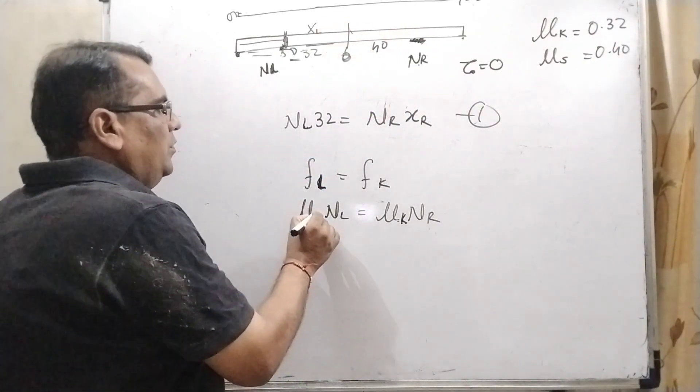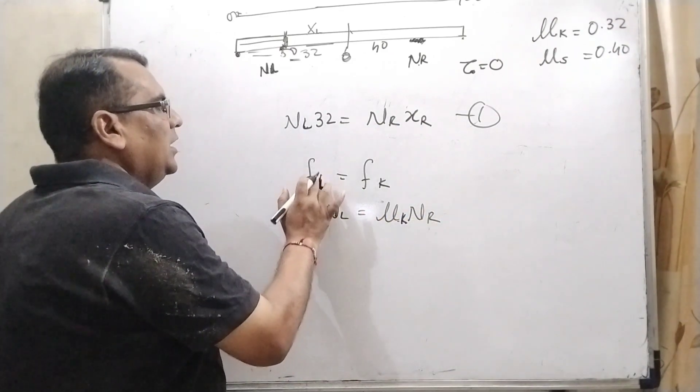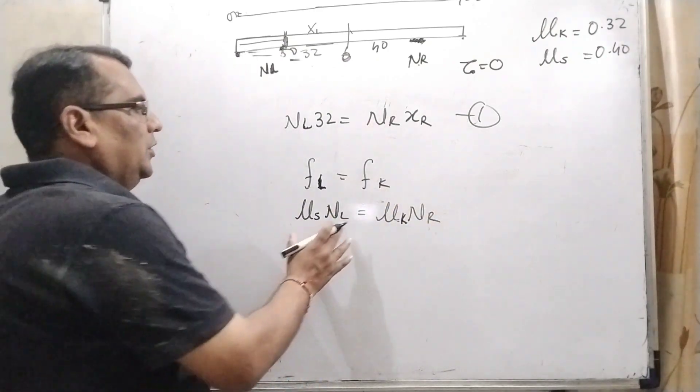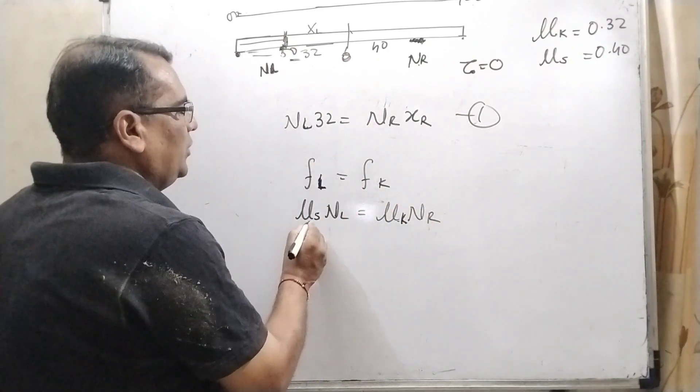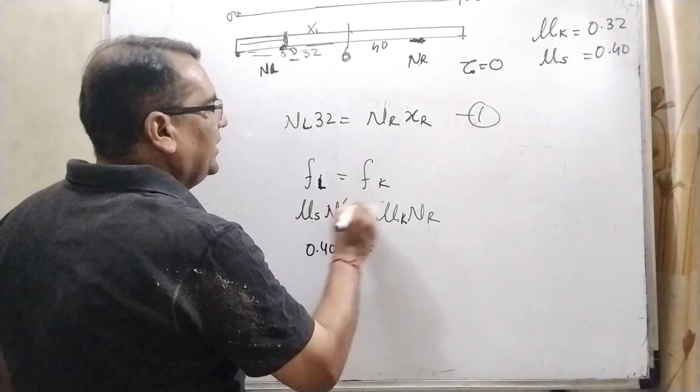So here μS × NL = μK × NR. This is the limiting frictional force equal to kinetic friction. Okay. Now substitute the value. What is μS? μS is 0.40 × NL'. Okay. Here we have considered dash because it is different normal forces.